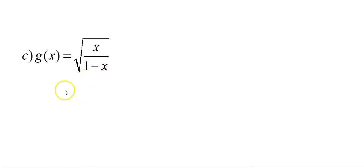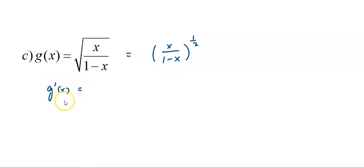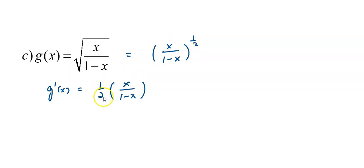We have g(x) equals the square root of x over (1-x). You can also write this in the form of [x/(1-x)] to the power of 1/2. We take this as our u function — u equals g(x) — and the whole function is f(g(x)). To find g'(x), we differentiate the outer function first, keeping the inside function x/(1-x) the same. Move the 1/2 to the front, and the power becomes 1/2 minus 1, which is negative 1/2, keeping x/(1-x) inside the bracket.